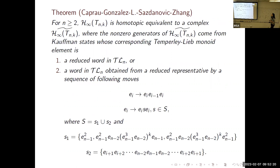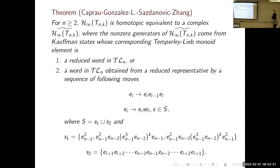With those two motivations, I can state the main theorem: the stable Khovanov homology of torus links has a specific explicit form as written. This is a bit hard to parse because it's hard to represent infinite objects.